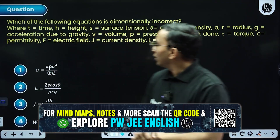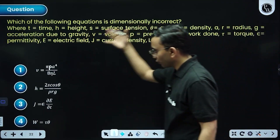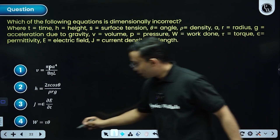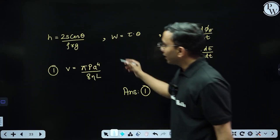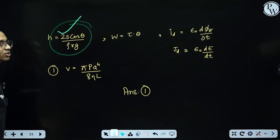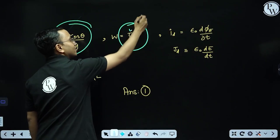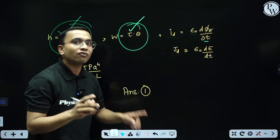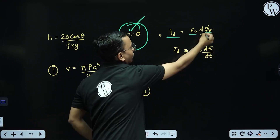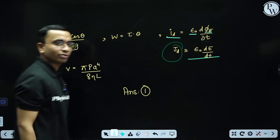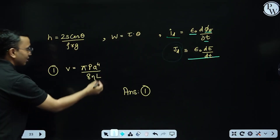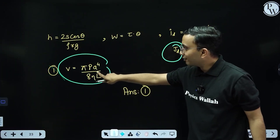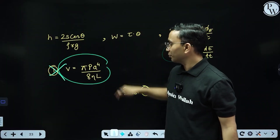Next question: which of the following equations is dimensionally correct? I know the formula for capillary rise: 2T·cosθ / (rρg) — that is correct. Work done in rotation is τ·θ — correct. The expression for displacement current is ε₀·dΦₑ/dt; if electric flux Φₑ = E·A, bringing area to the denominator gives current density — also correct. The only remaining expression is the first one, which is incorrect because it has Q in place of V, inconsistent with Poiseuille's formula.